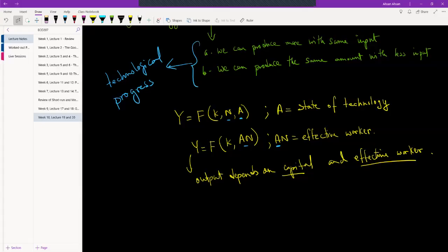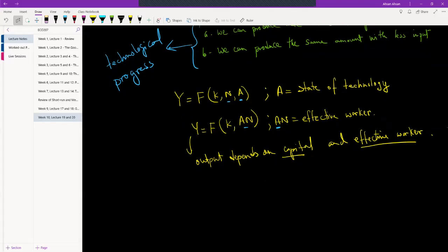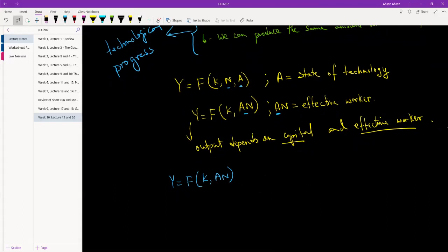We're going to do the exact same thing as we've done previously. We're going to convert this, what we have y goes to function of k, a, n into per worker term. The only difference is now we no longer have per worker, we are going to have per effective worker.